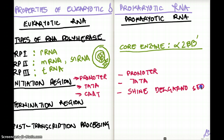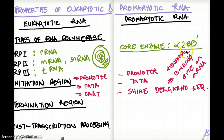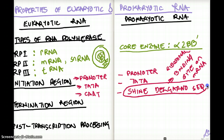Prokaryotes have a Shine-Dalgarno sequence, which is not found in eukaryotes. Eukaryotes have an equivalent called the Kozak sequence, but that's typically not tested on USMLE. The Shine-Dalgarno sequence is a ribosomal binding site on mRNA, and if you see it mentioned, you know it's referring to prokaryotes.